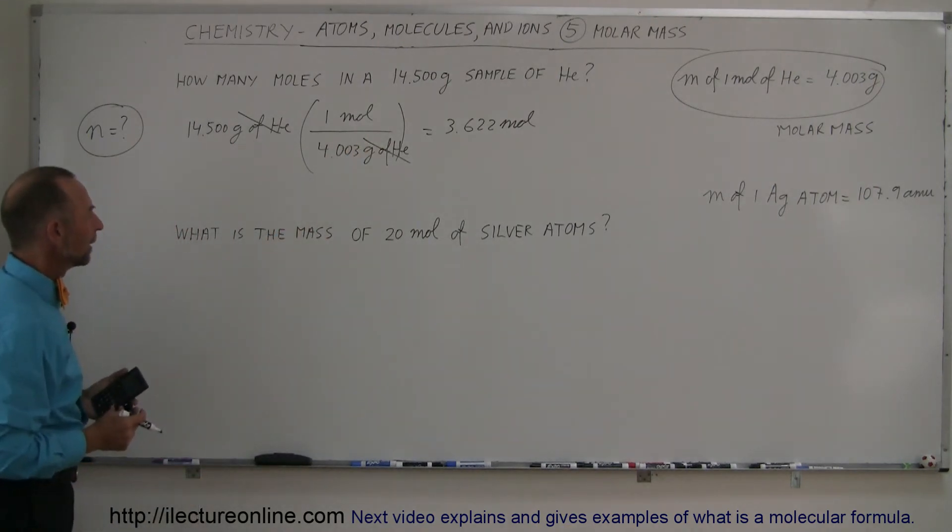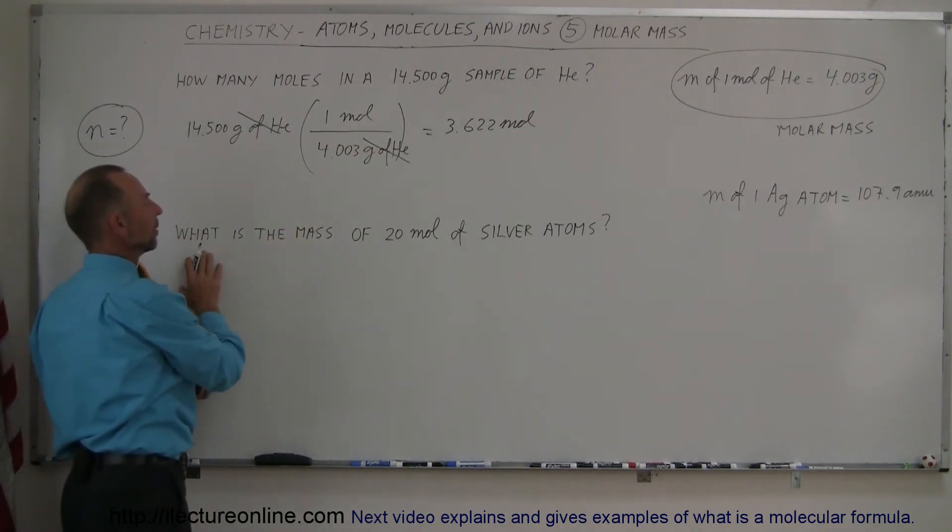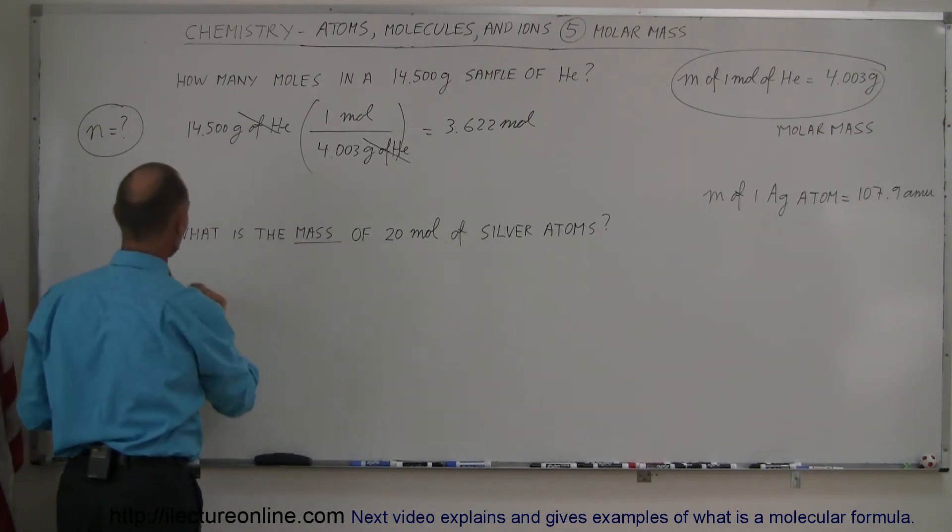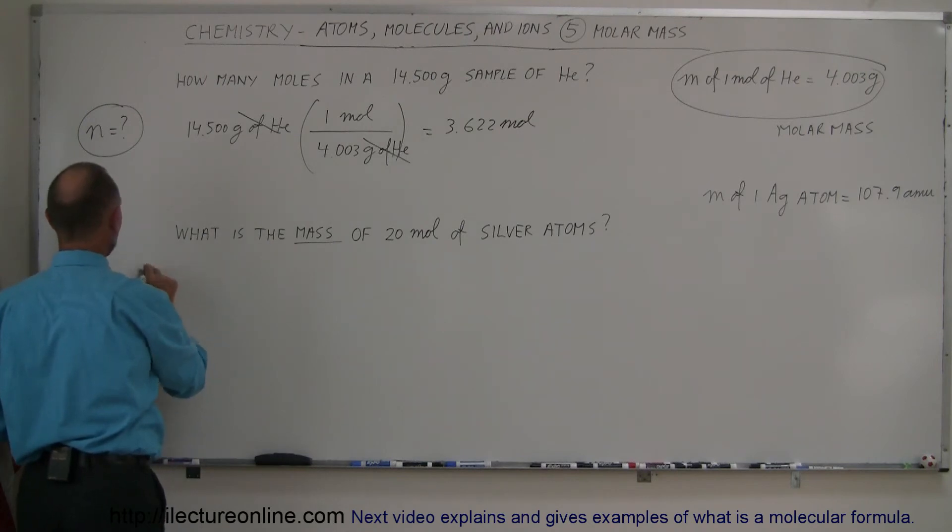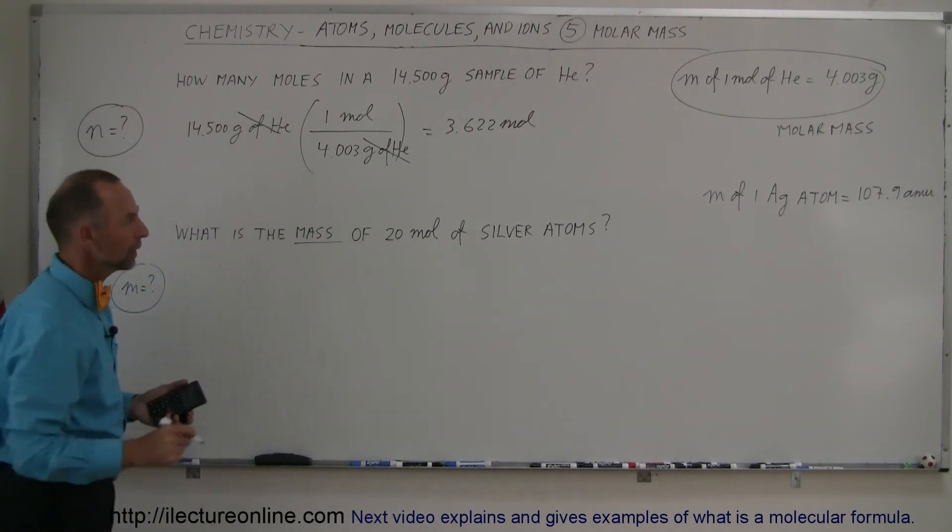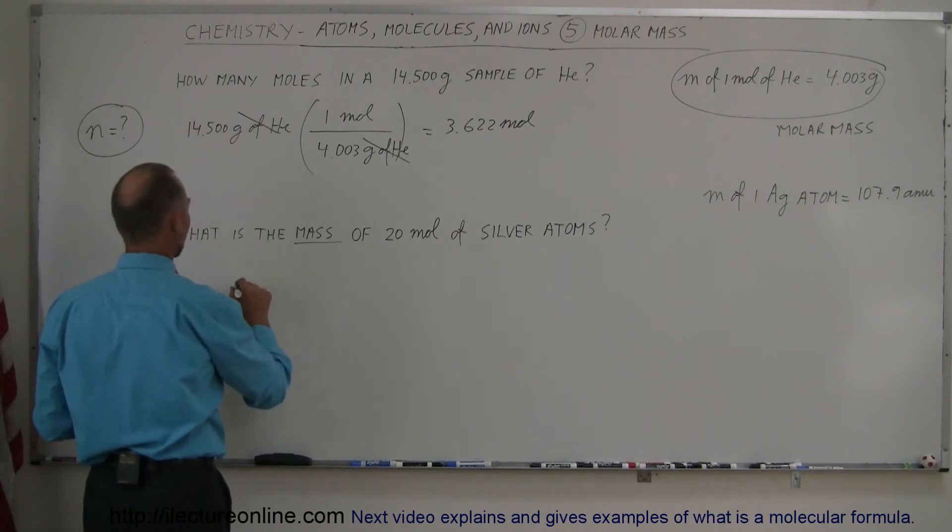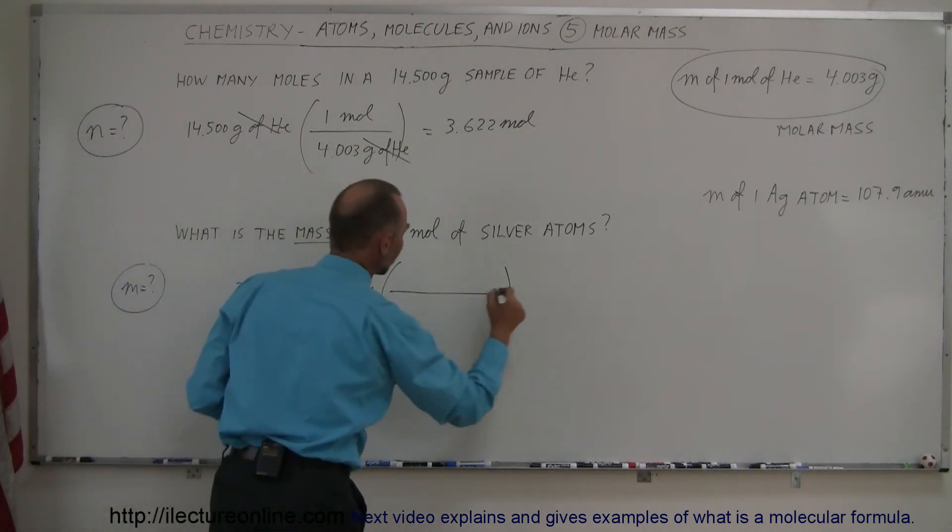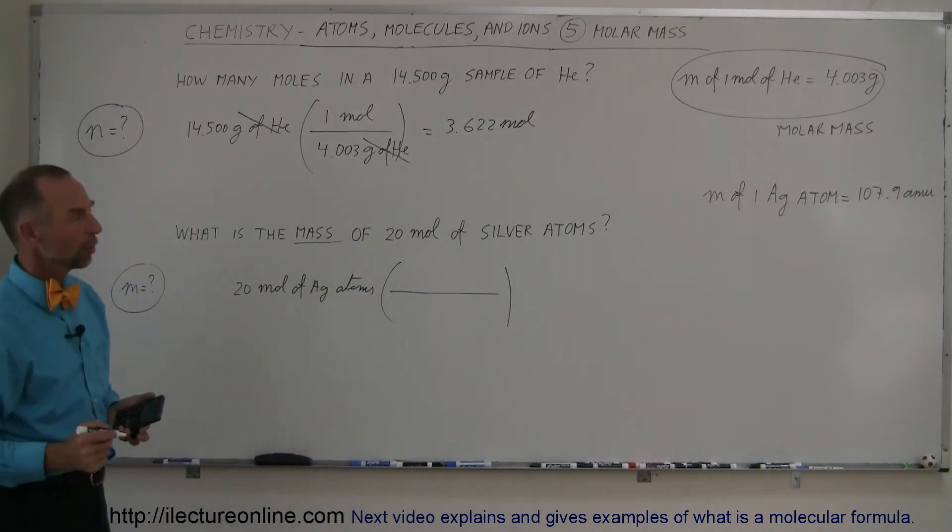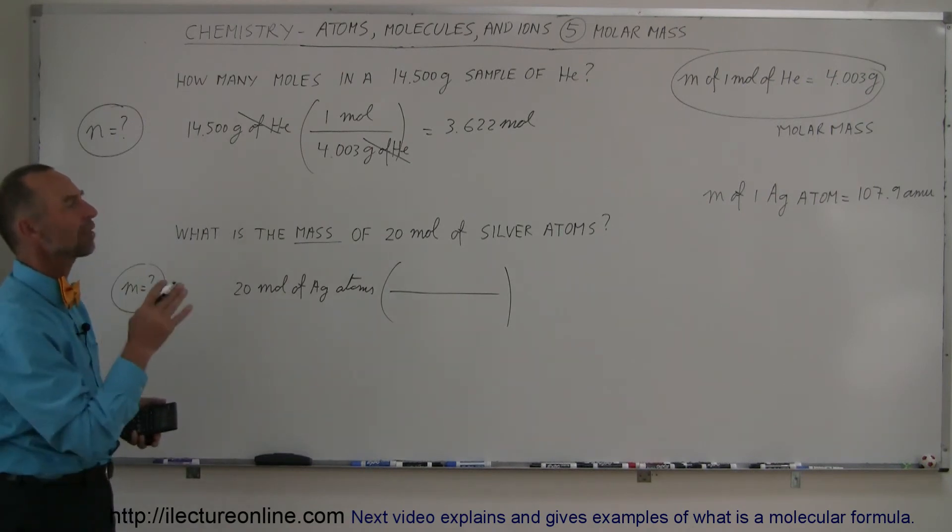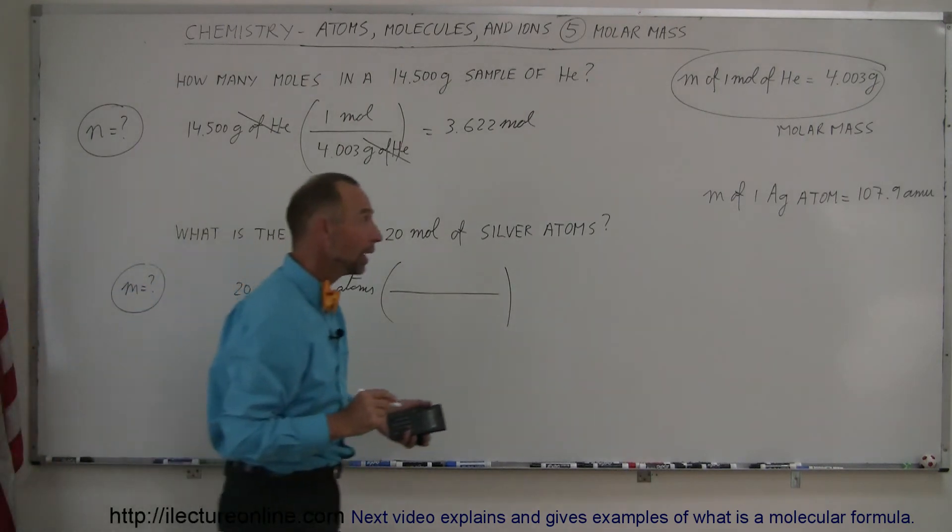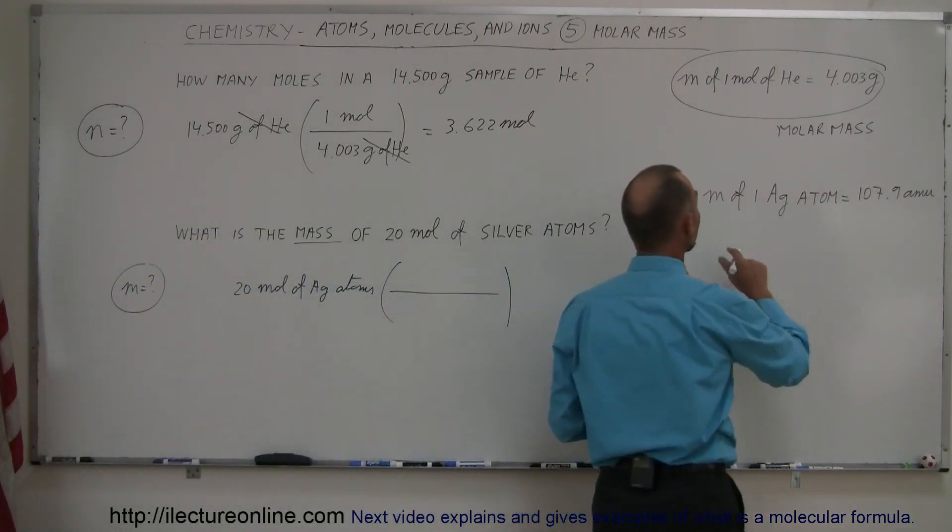Now, what if we have 20 moles of silver atoms, and we want to know the mass of that? What is the mass equal to if we have this many moles of silver atoms? Well, we take the number of moles, so we have 20 moles of silver atoms, and we're going to multiply times the molar mass. Now, they didn't give us the molar mass. They gave us the mass of one single silver atom. But now we know that there's a relationship, because if we have a mole of them...